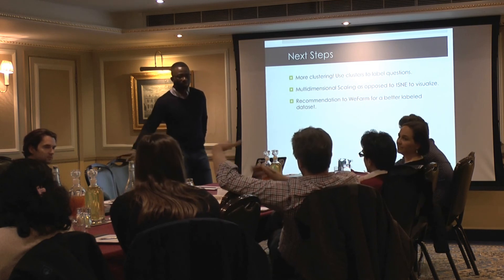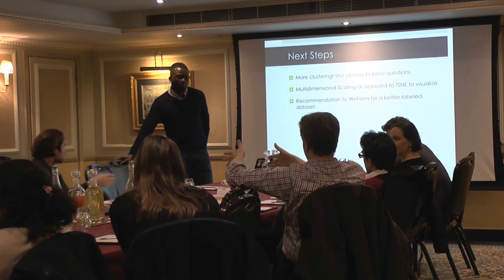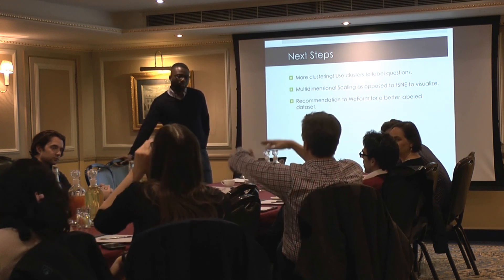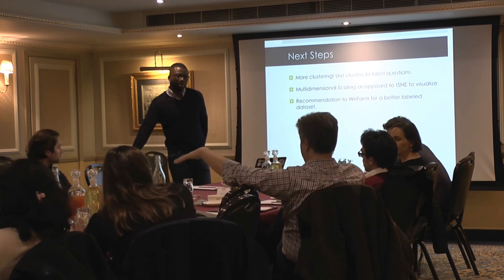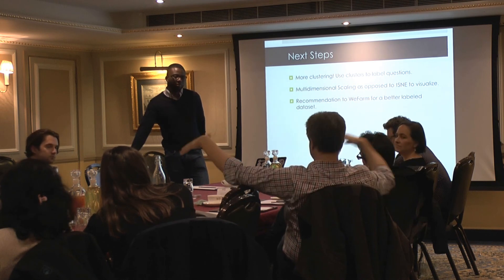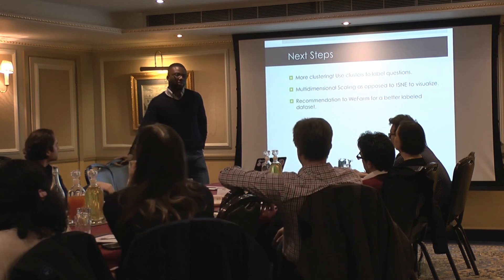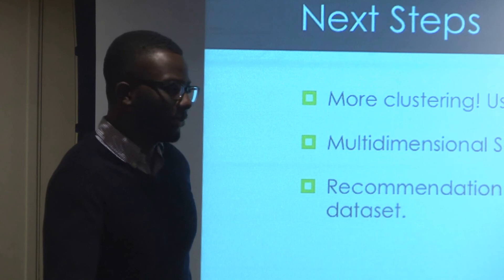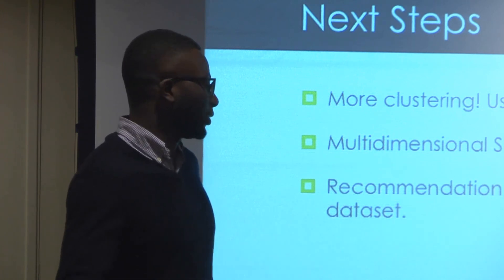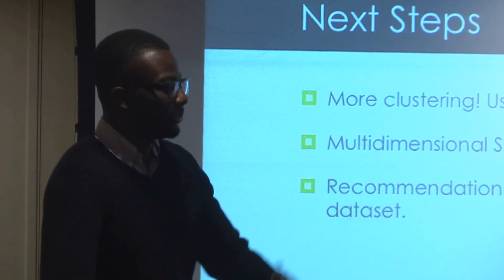Another question from the audience: since we're dealing with quite short questions that become even shorter after tokenizing and removing stop words, have I thought about Jaccard distance - essentially the ratio of intersection to union of a set - to measure similarity? Just the overlap of words might take you quite a long way with eight or ten word questions. I said I did read about that on Stack Overflow but didn't understand it well, so I stuck with cosine similarity since Doc2Vec's most_similar function uses that in its implementation. But that is something I could use as a recommendation.